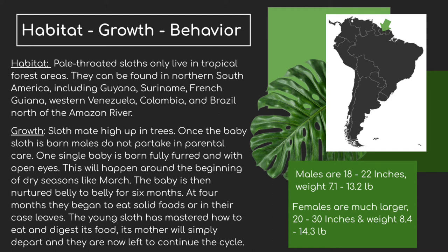An interesting fact is that once the baby is getting fed by the mom, they actually start to eat afterwards whatever type of leaf the mom feeds the baby — they will then start eating that leaf, because that's what they were shown when they were first a baby. At four months, they begin to eat solid foods, or in their case, leaves. Once the young sloth has mastered eating and digesting its food, its mother will simply depart and they are left to continue the cycle.